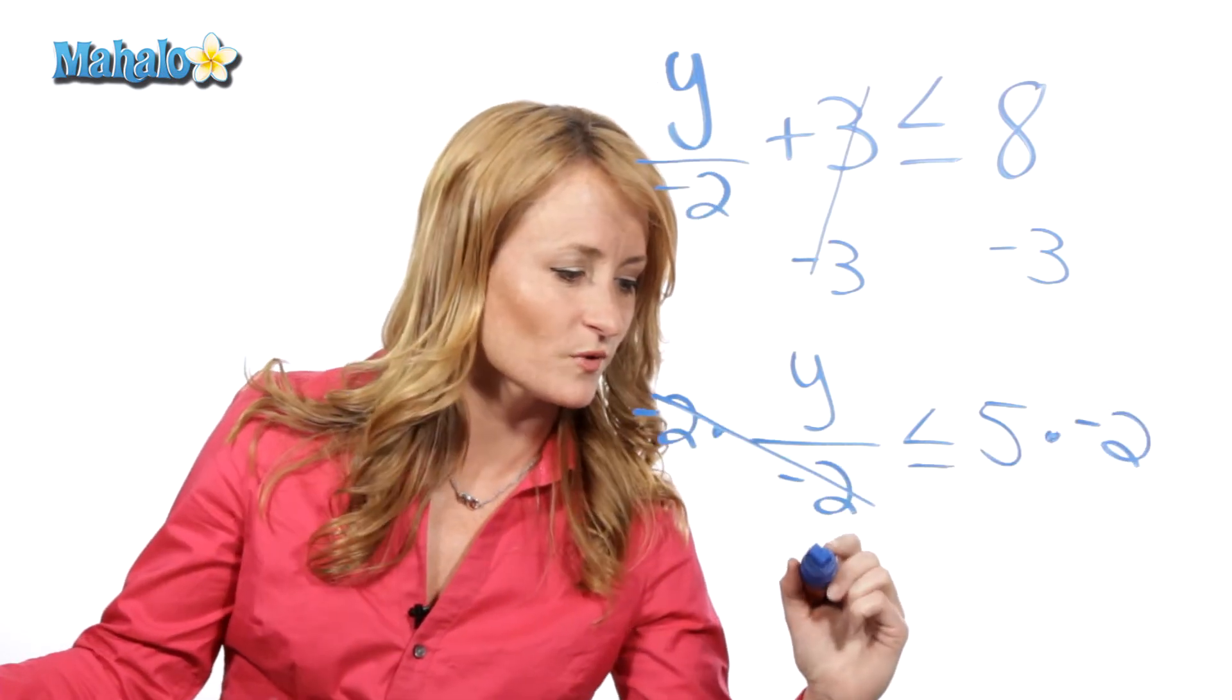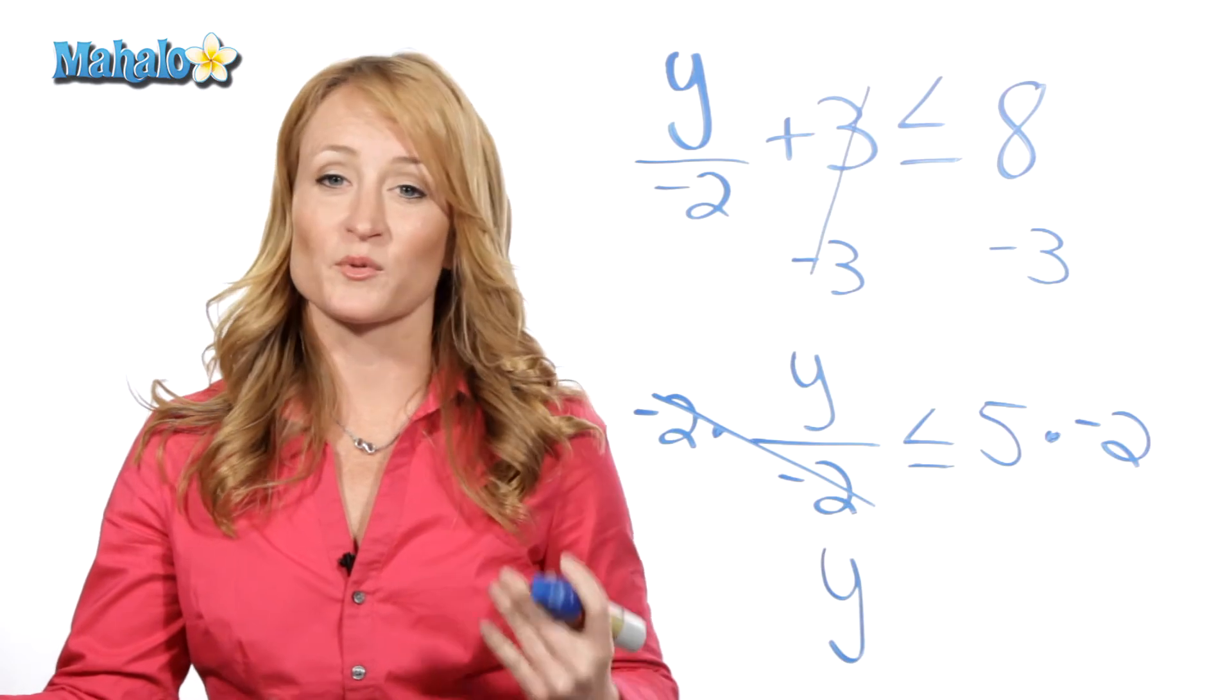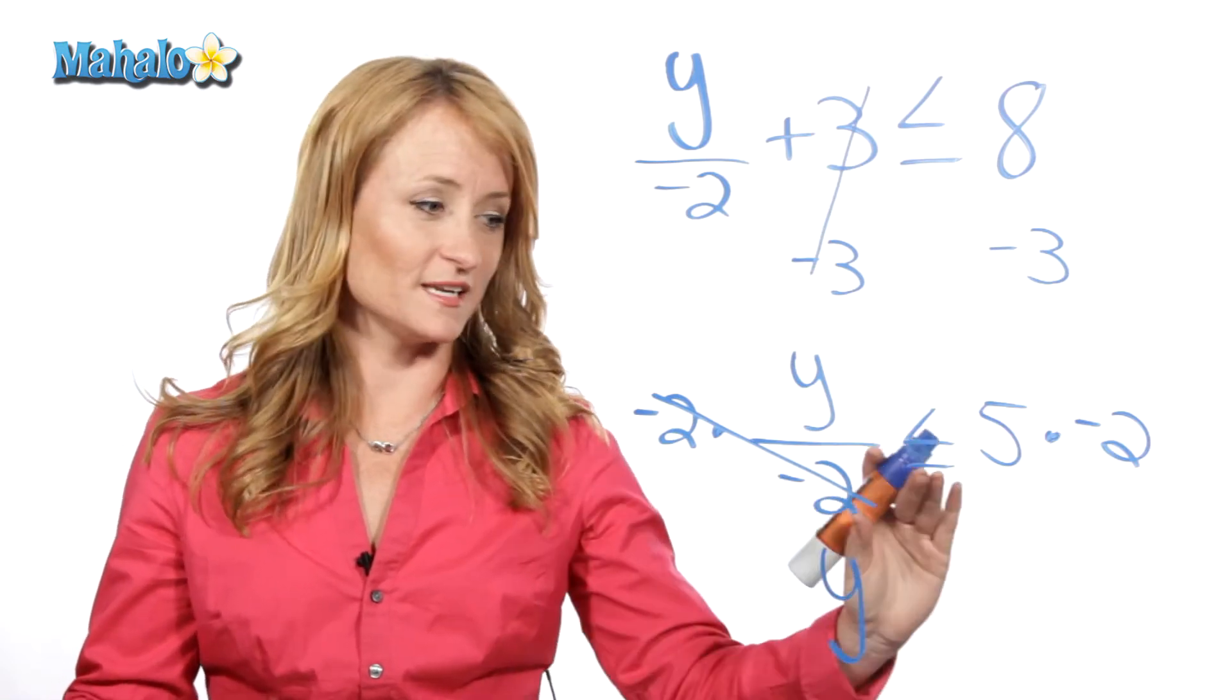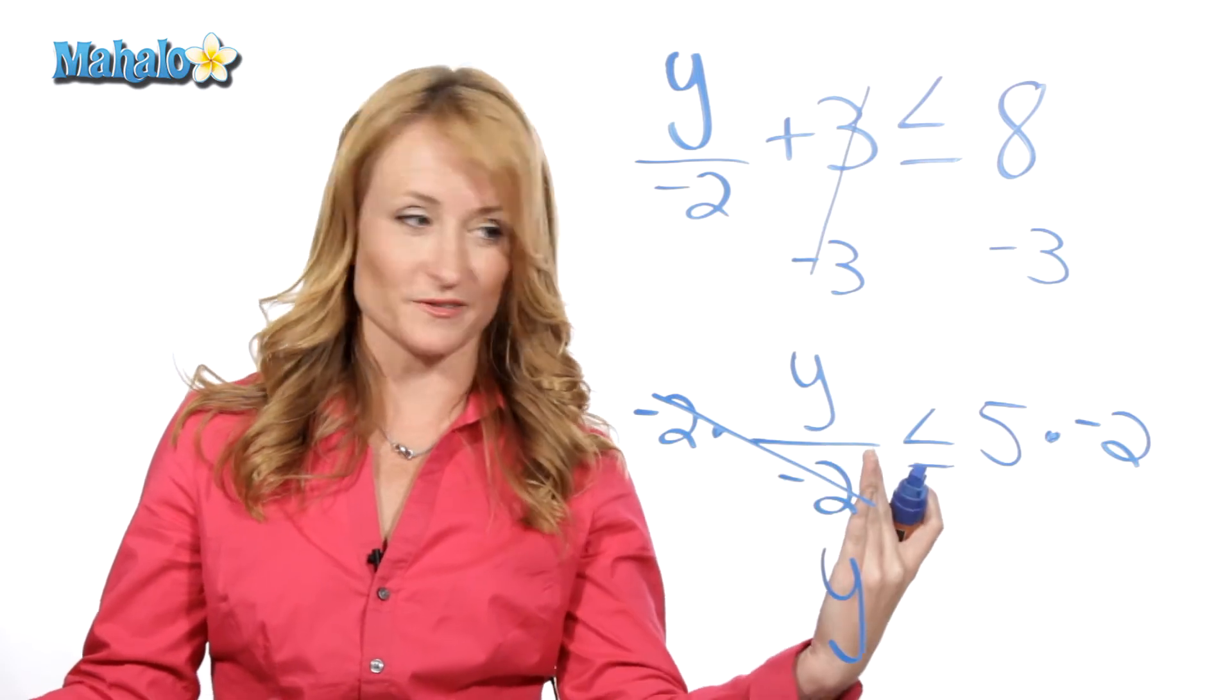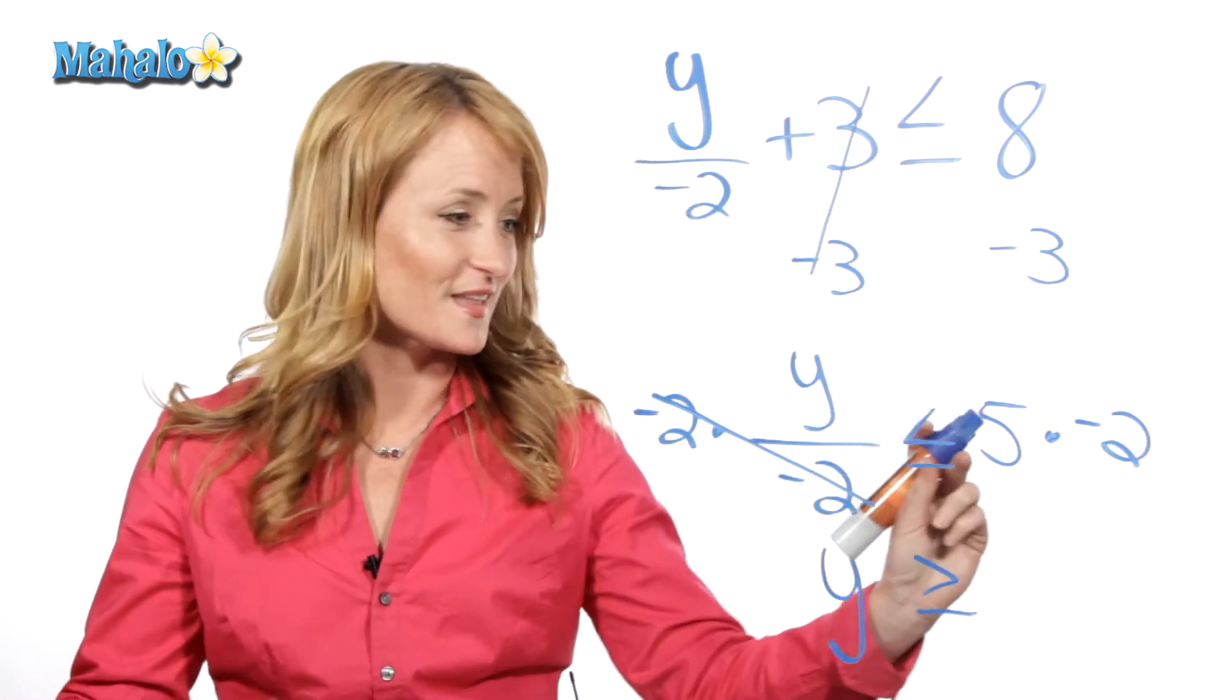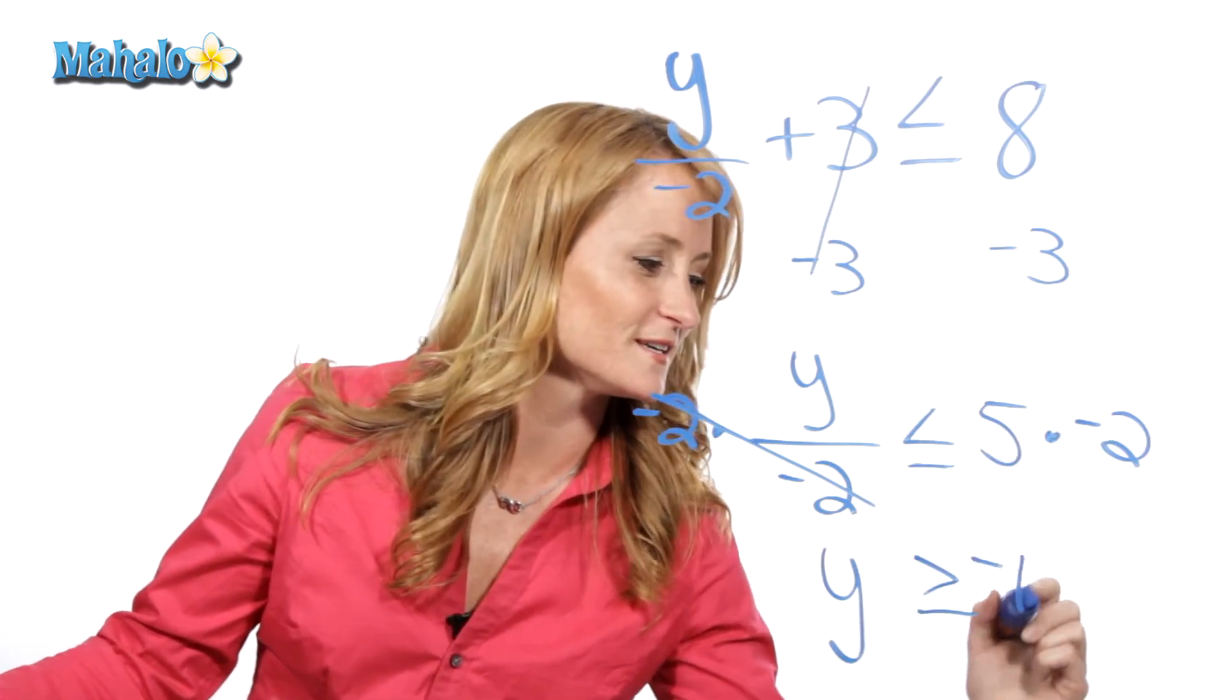This cancels out, so we're left with y. And remember the rule. Any time you multiply or divide by a negative with an inequality, that inequality needs to flip. So this needs to change to greater than or equal to, and 5 times negative 2 is negative 10.